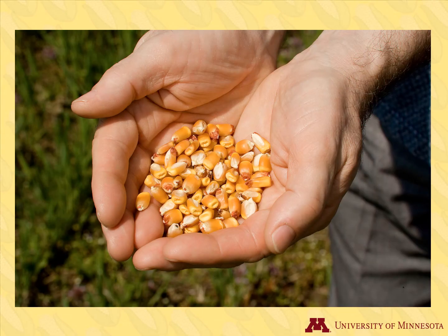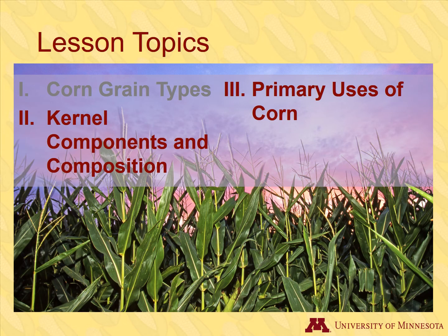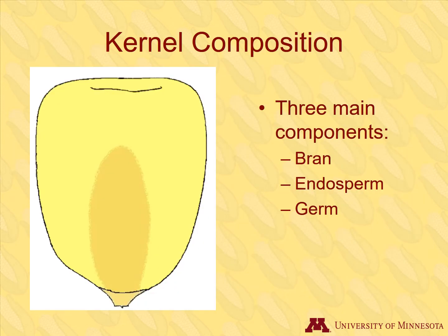So how does a seemingly simple kernel of corn get made into all these complex products? The corn kernel has various components that can be used for different purposes. Before we get into the products that are produced from corn, let's first look at the composition of dent corn. There are three main components of the kernel: bran, endosperm, and germ. Different types of corn vary in their specific composition of these components. However, we will focus on dent corn as it is the most commonly used type.